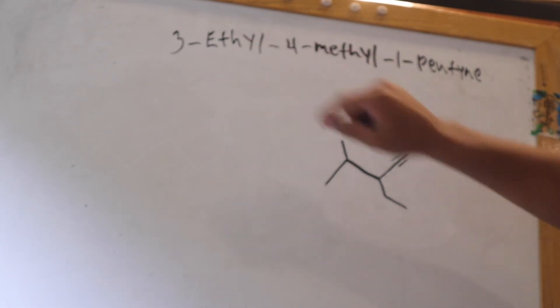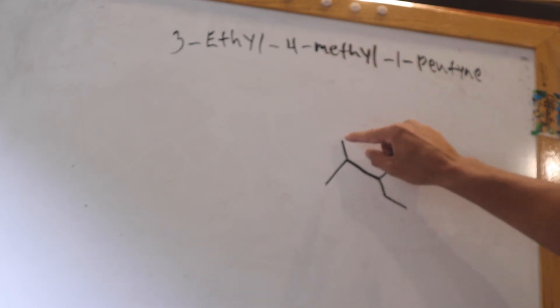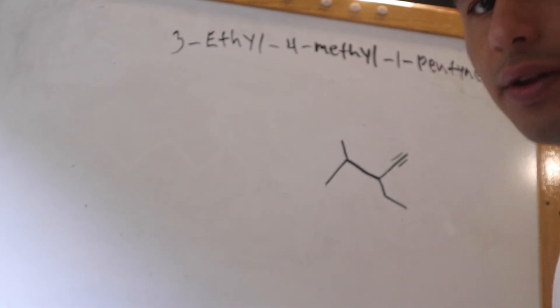Third carbon, ethyl group, right over here. Fourth carbon, methyl group. That would be what goes up over here. So that's how you do that one.